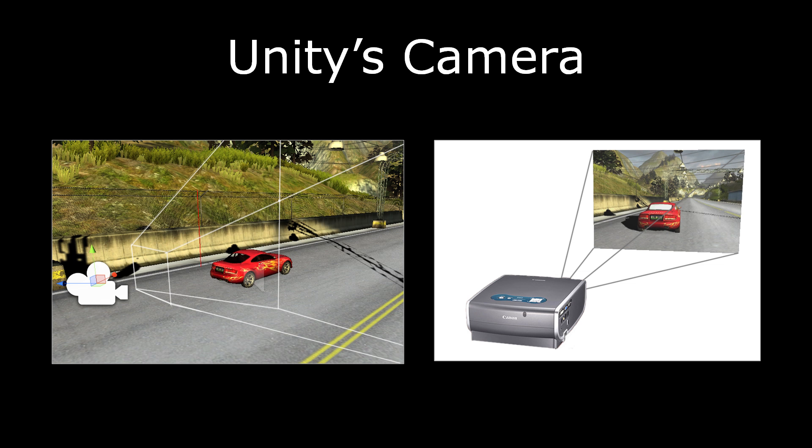Like cameras in all game engines, Unity's in-game camera creates rectangular images for display on flat screens such as a computer monitor, mobile device, or video projection on a flat wall. If the image was projected onto a curved surface like a dome, it would appear distorted.